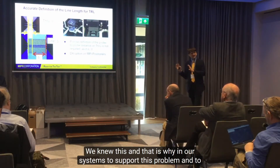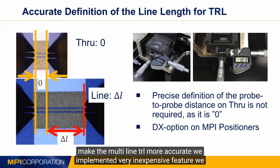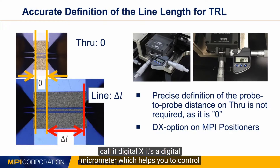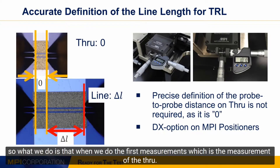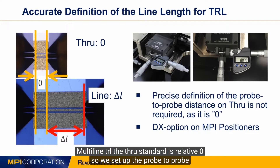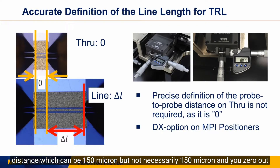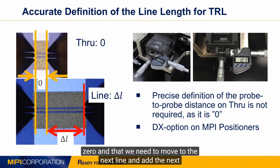Knowing this, in our systems we implemented an inexpensive feature we call Digital X — a digital micrometer that helps you control the difference in transmission line length when you do multi-line TRL on a wafer. When you do the first measurement — the through standard, which is your relative zero — you set the probe-to-probe distance, which can be 150 microns, and you zero out the digital micrometer at that position.